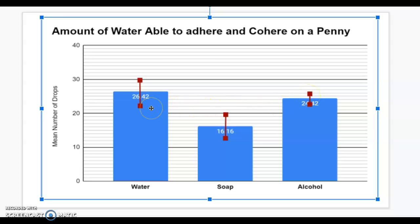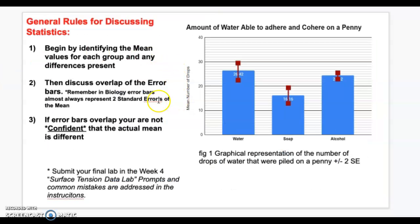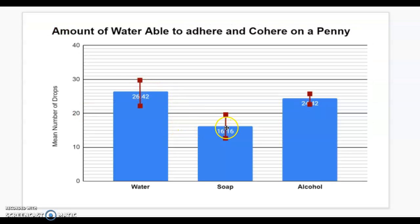Now, let's talk about overlap. So, the first thing you need to do is you need to discuss the average. Then you discuss the overlap. And in this case, because soap and water do not overlap, we are 98% confident that those means are actually different. And soap, water, holds, adheres, and coheres less to a penny.